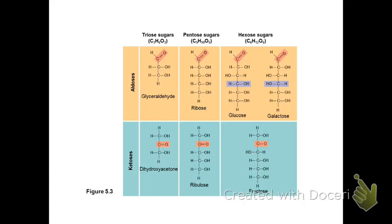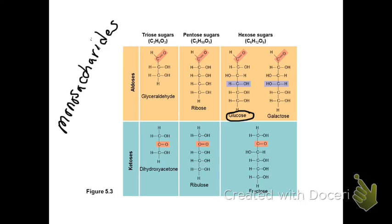We're going to start with the basics in carbohydrate structure. Just as amino acids are the building blocks of proteins, simple sugars called monosaccharides are the building blocks of carbohydrates. Some common monosaccharides are glucose and fructose. These are very common monosaccharides, and you're going to need to know the structures of both glucose and fructose — have them memorized.